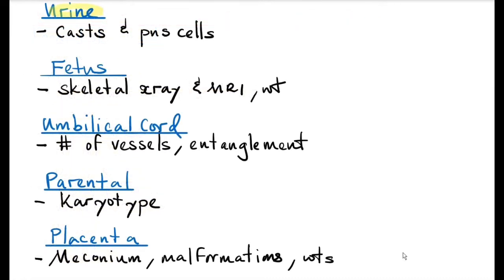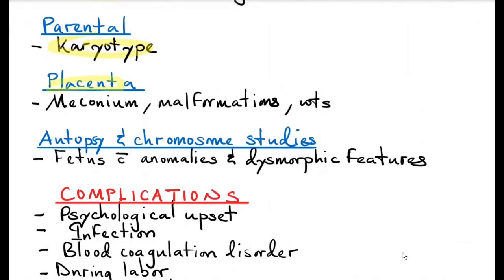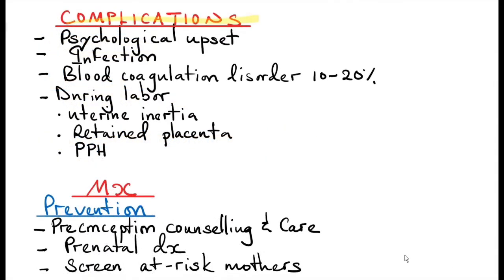Send urine for microscopy, culture and sensitivity — casts may indicate renal disease and organisms indicate infection. Do a thorough examination of the fetus and placenta. If there are any malformations, send the fetus for skeletal X-ray and MRI, weigh the fetus, and assess the umbilical cord for the number of vessels and any entanglement. For the parents, do a karyotype to determine if there are any chromosomal abnormalities. Assess the placenta for meconium staining, any malformation, and weigh the placenta. Perform autopsy and chromosomal abnormality studies if the fetus has anomalies and dysmorphic features.